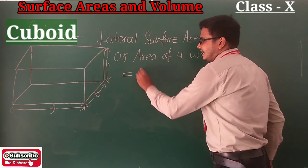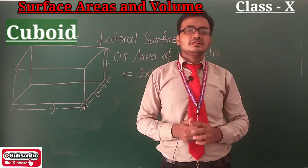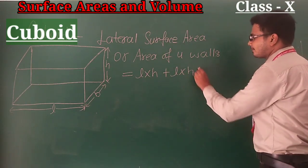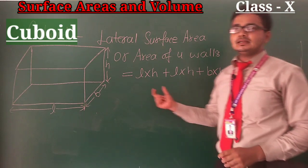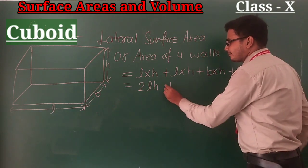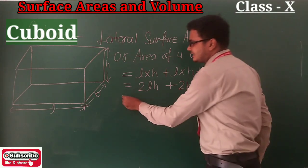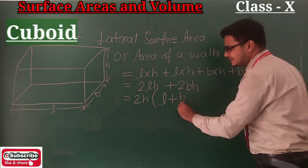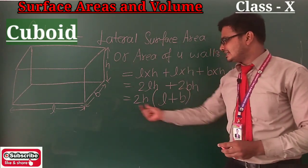We take L×H + L×H, which is the area of opposite walls. Since opposite walls are equal, we have L×H + L×H + B×H + B×H. Adding these gives 2LH + 2BH. Taking 2H as common, we get 2H(L + B). So this is the formula of Lateral Surface Area of a Cuboid: 2H(L + B).